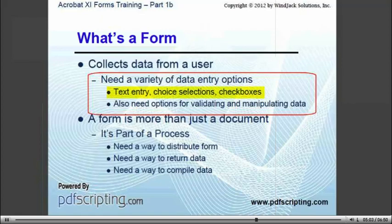At a minimum, the form needs the ability to enter text, to select options from a list of choices, and to check items on and off. Another important feature is the ability to interact with the user and the data. We need the form to be able to validate data entry, to perform calculations, to pre-fill data fields, to display messages to the user to guide them through the process, and to do any number of other operations that will make it as easy as possible to collect the data.